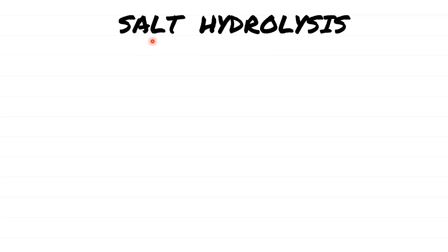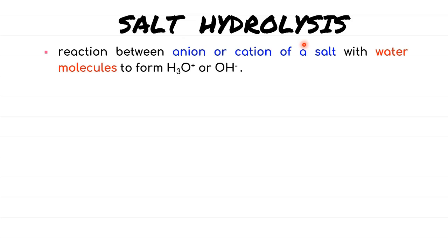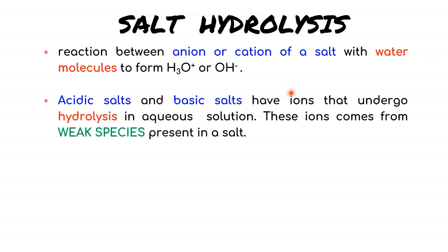These types of salts can be determined experimentally via a reaction called salt hydrolysis. Salt hydrolysis is a reaction in which salts react with water. Both acidic and basic salts will have ions that are capable of performing hydrolysis in aqueous solutions. The criteria for ions to undergo hydrolysis is that they originated from weak species. If we recall the dissociations of weak species, it will undergo only partial dissociation. Hence, there are still traces of reactants left to further react with water.